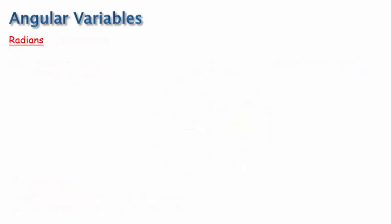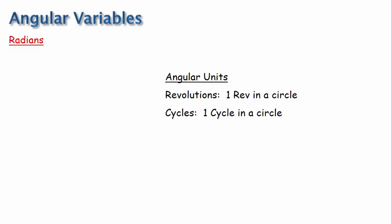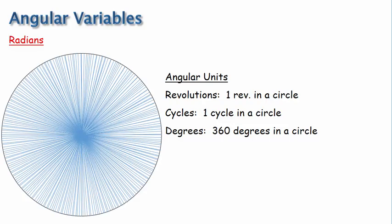In general, angular units are used to indicate how far something goes around a circle. Common units to describe this are simply revolutions and cycles. For instance, the bicycle wheel made X number of revolutions or cycles. In these cases, there is just one revolution or one cycle in a complete circle. Another common unit is a degree, where there are 360 degrees in a complete circle. All we are doing in each case is defining how many segments the circle is separated into. So when using degrees, the circle is separated into 360 segments. I'm not sure there are 360 segments in my picture, but you get the idea.